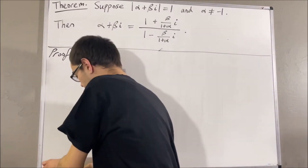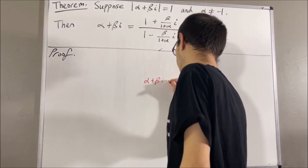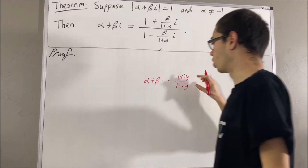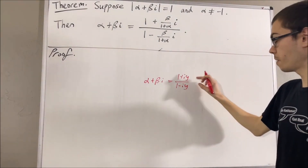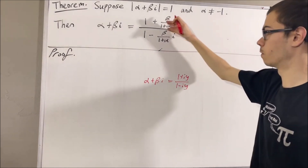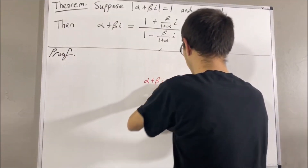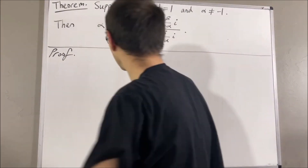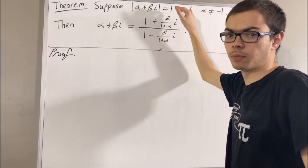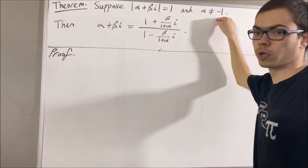Now, the reason why you might conjecture this is because if you take alpha plus beta i and set it equal to 1 plus iy over 1 minus iy, where y is a real number, then if you algebraically solve for y, you'll find that y is equal to beta over 1 plus alpha. So that's the reason why you might conjecture this. Now, alpha plus beta i is essentially just a complex number on the unit circle, but not at the point negative 1.